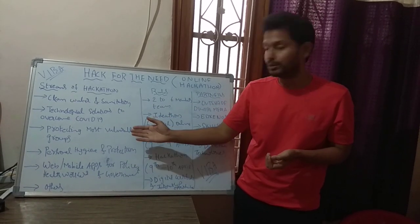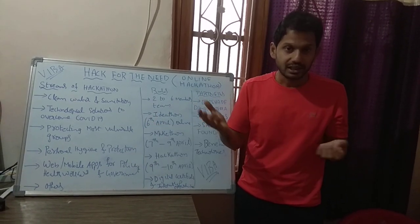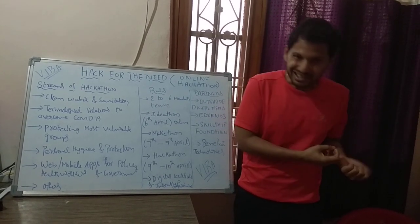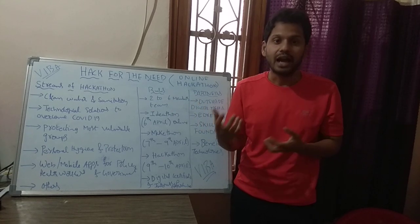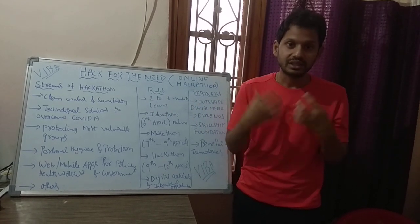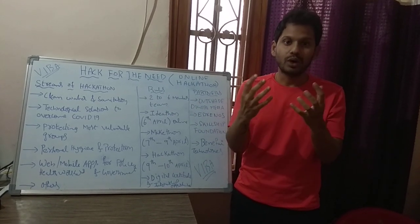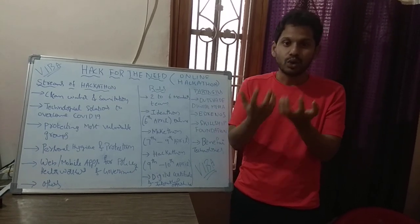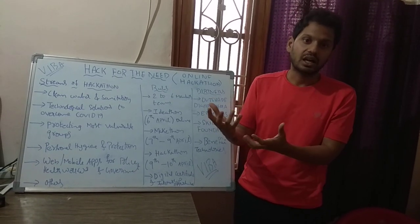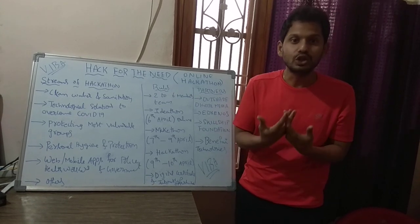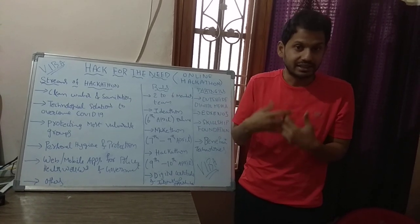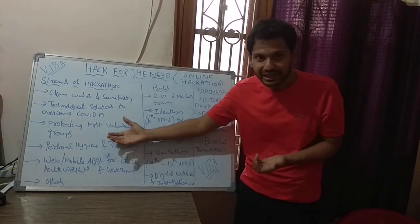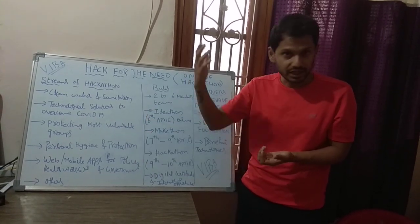The third stream is protecting the most vulnerable groups. As mentioned in my previous video, the most vulnerable groups are kids, older people, and those who have less immunity. These are the most vulnerable groups who are likely to be affected by coronavirus. If you have some technological or non-technological solutions to protect these groups, you are invited.